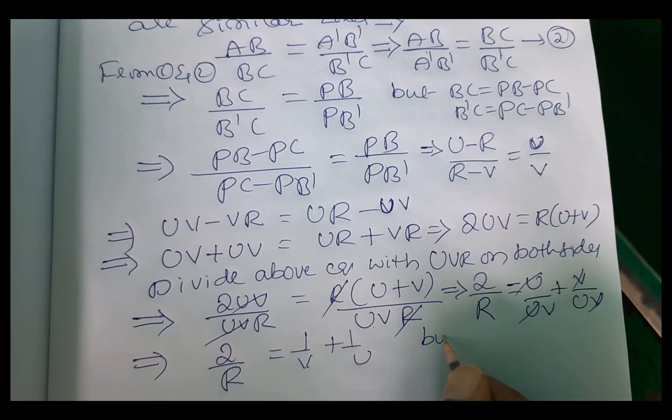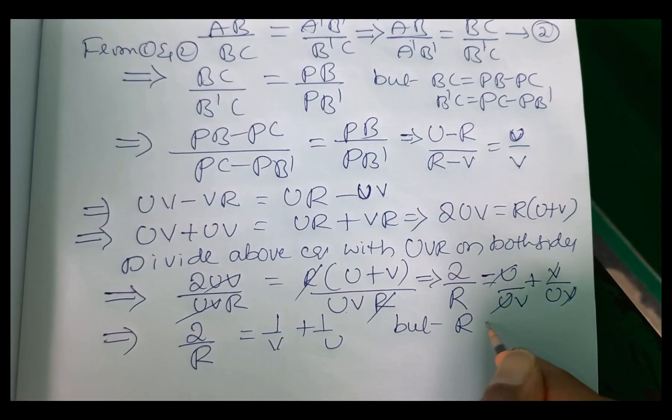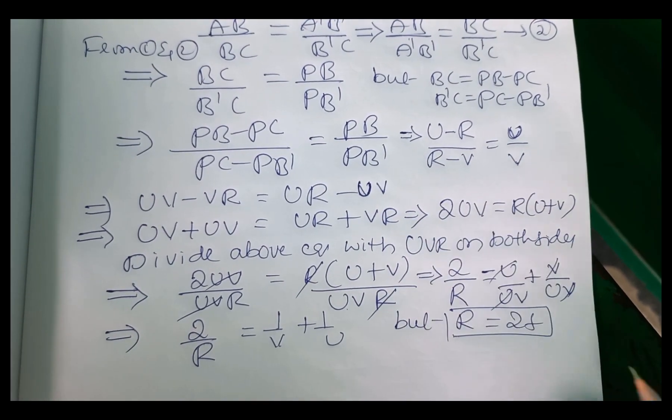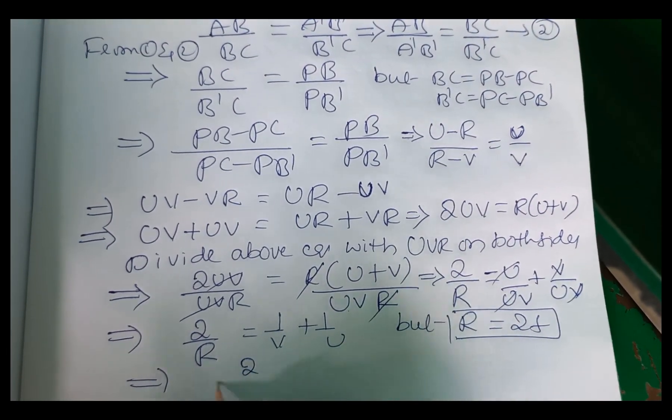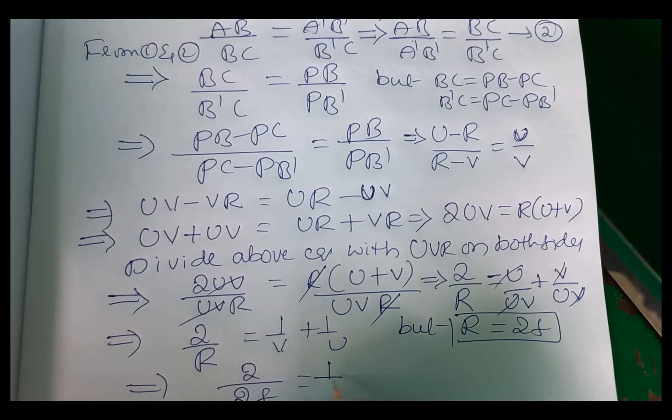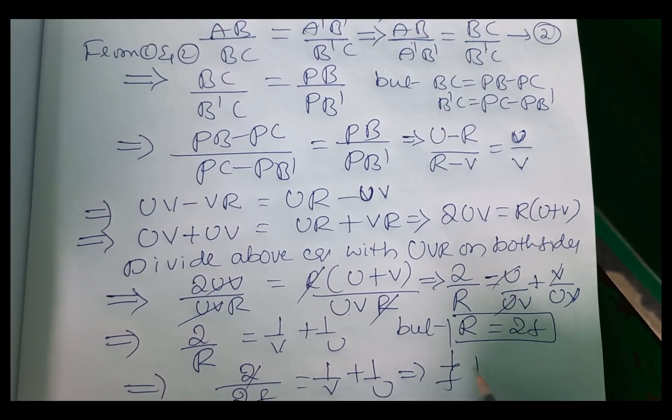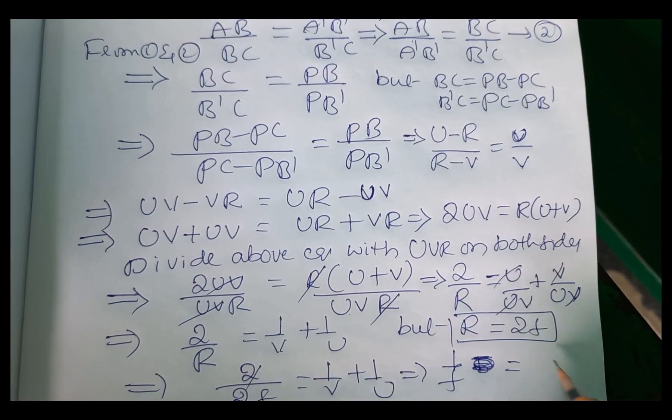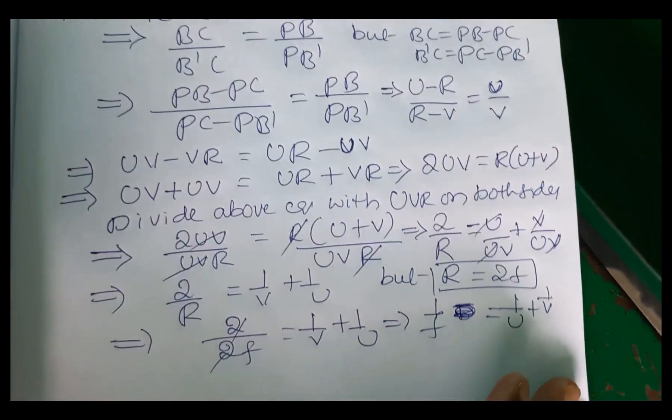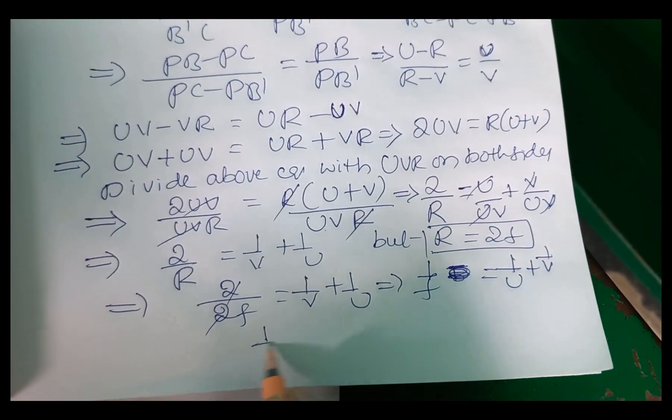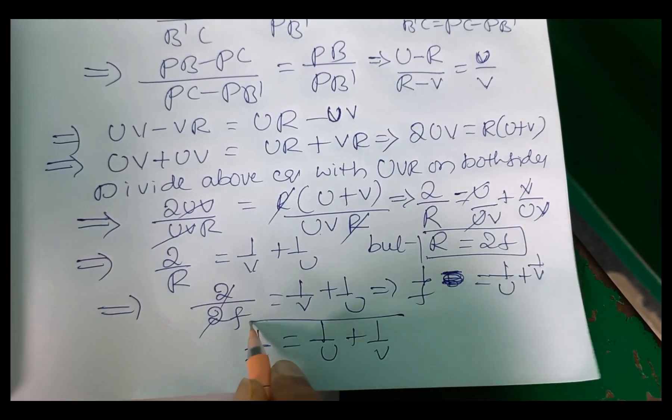But we know that radius of curvature is equals to 2 times the focal length. Radius of curvature, R is 2F. That is 2 by 2F is equals to 1 by V plus 1 by U. 2 cancel. This implies 1 by F is equals to 1 by F is equals to 1 by U plus 1 by V. So mirror formula. And final 1 by F equals to 1 by U plus 1 by V, where small F is focal length, U is object distance, V is image distance.